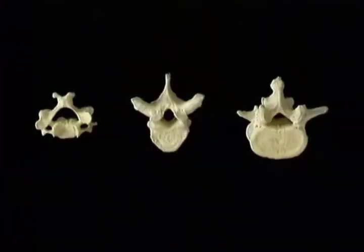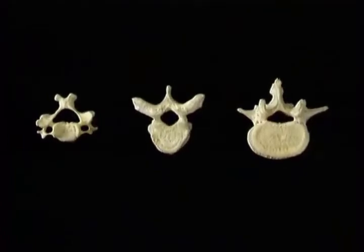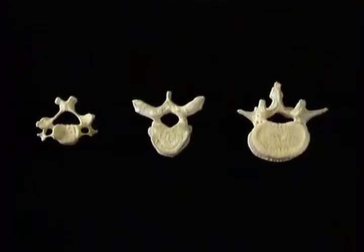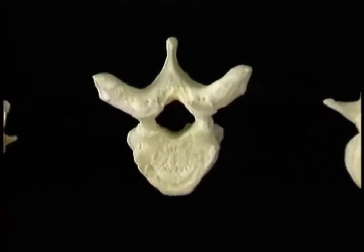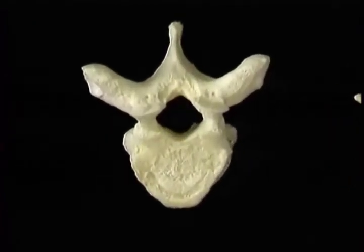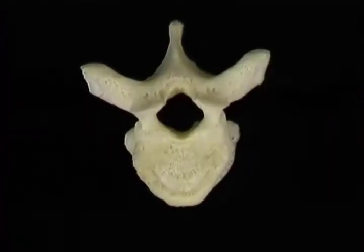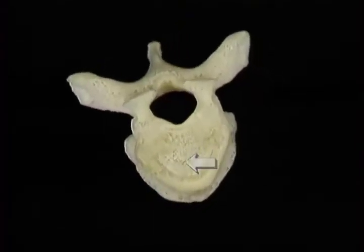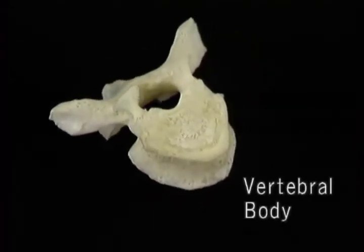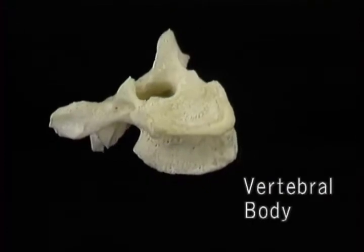There are marked differences between vertebrae of different regions, but they all have some basic features in common. We'll look at a typical thoracic vertebra to see what these features are. In front, this cylindrical mass of bone — the body of the vertebra — supports the weight of everything that's above it.